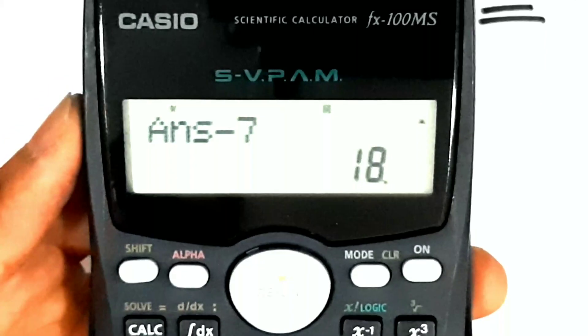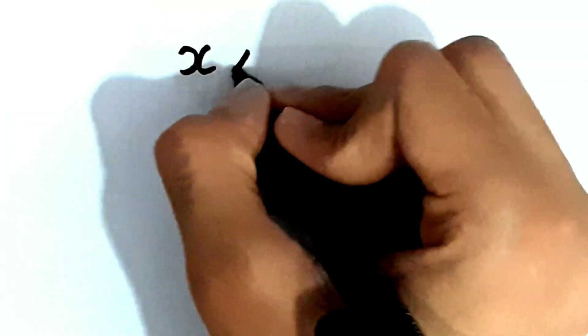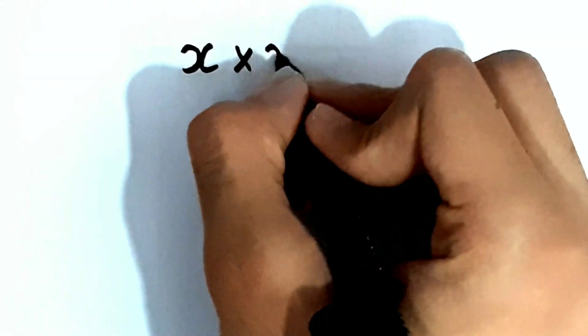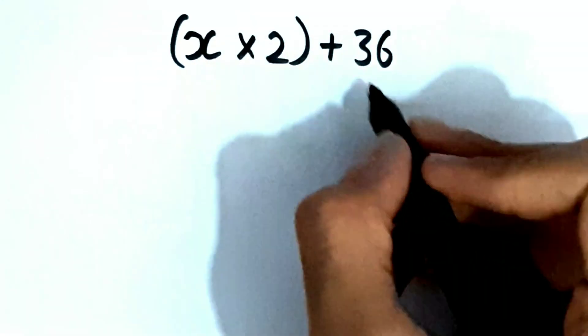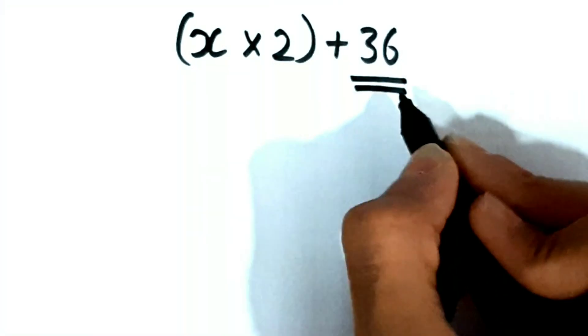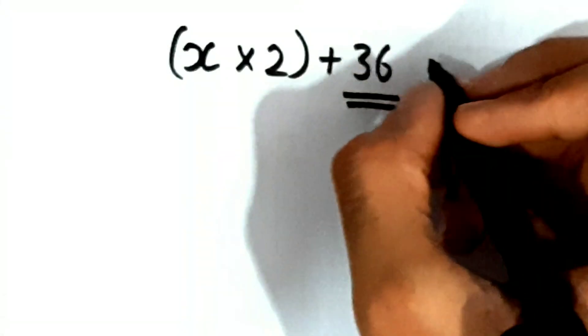The answer is 36, so this trick does not require any mentalism or any math calculation. It's just a simple trick. I'll explain it and then we'll see how to do it. Let's take the number selected by the spectator to be x. Then we multiply it by 2, then add 36. The number that you tell them to add is an important number — 36 in this case.